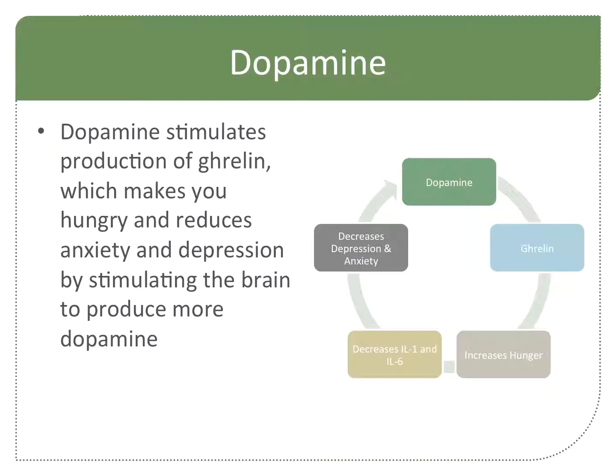Within the hunger pathway, dopamine produces ghrelin. Ghrelin makes you hungry, and that's going to reduce anxiety and depression — via interleukin-1 and interleukin-6 — by stimulating the brain to produce more dopamine. So you keep this pathway going with hunger.